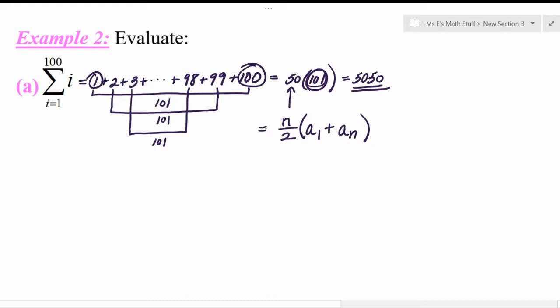And then this would be a formula for what's called your nth partial sum. So if you see an uppercase S with a subscript n, that means your nth partial sum. So in this case, it was a 100th partial sum of this arithmetic series.